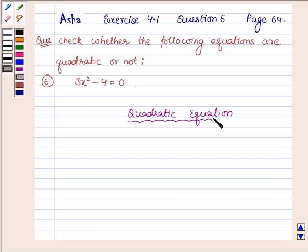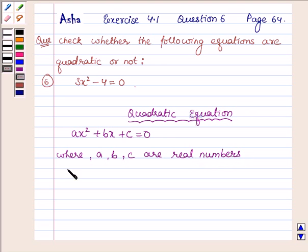The general form of quadratic equation is of the type ax squared plus bx plus c equals 0, where a, b, and c are real numbers and a is not equal to 0.